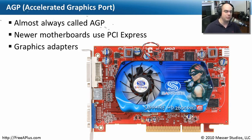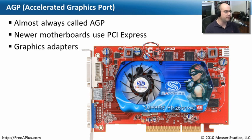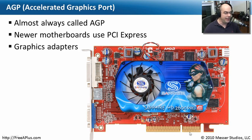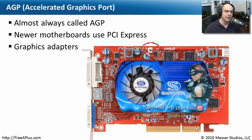We usually don't call them Accelerated Graphics Port — we almost always call them an AGP card or an AGP port. These days most motherboards are using PCI Express, which has much faster throughput and allows video cards to send a lot more information back and forth on the bus. But occasionally you'll run into graphics adapters on older systems where the motherboard will allow you to install an AGP card. Almost always there's video built into the motherboard, but if it has that AGP slot, we could buy an AGP compatible board, plug it right in, and get much better throughput and a much better video experience.